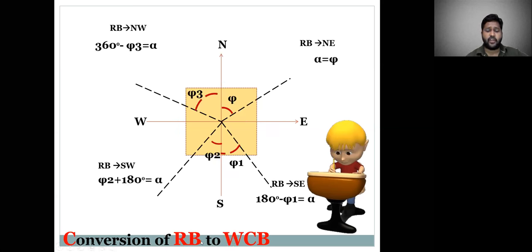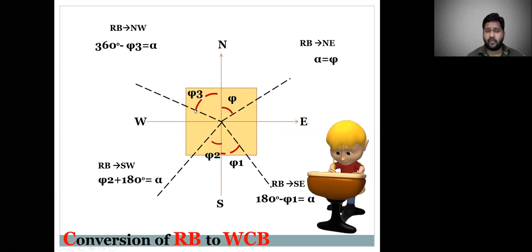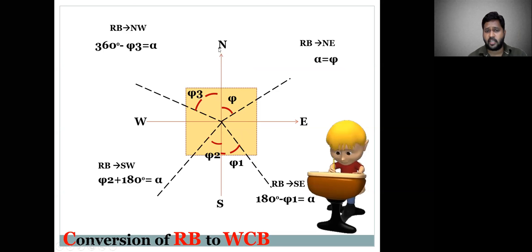For conversion of Reduced Bearing to Whole-Circle Bearing: use 360 minus theta, or theta plus 180 for the relevant quadrant. If theta2 is the reduced bearing angle, then theta2 plus 180 gives alpha (the whole-circle bearing). Also, 180 minus alpha gives the whole-circle bearing in certain cases. These conversion formulas help you convert between Reduced Bearing and Whole-Circle Bearing easily.